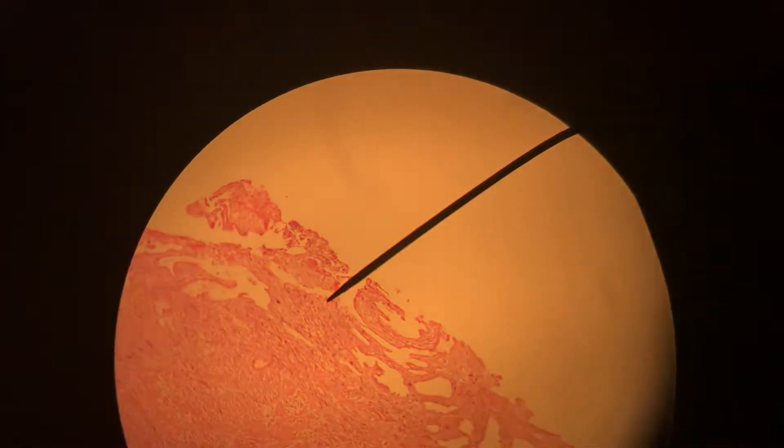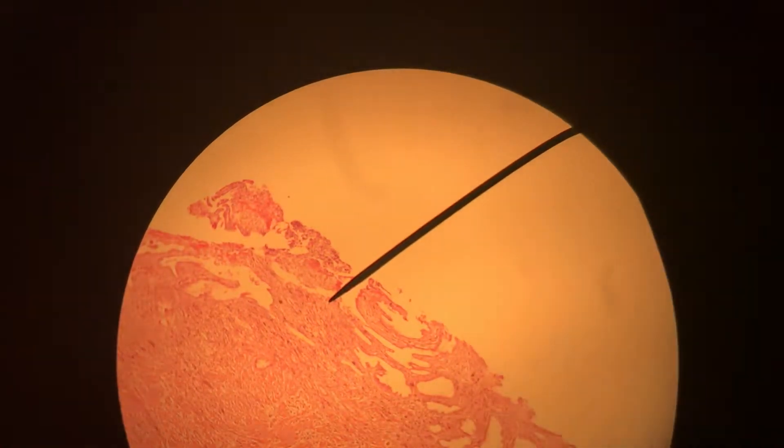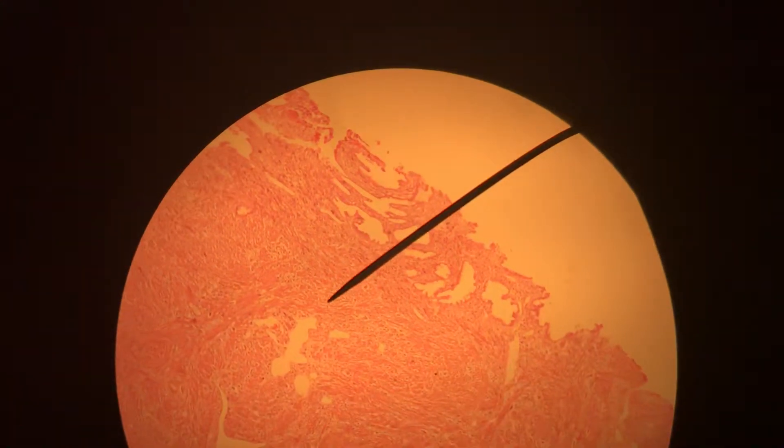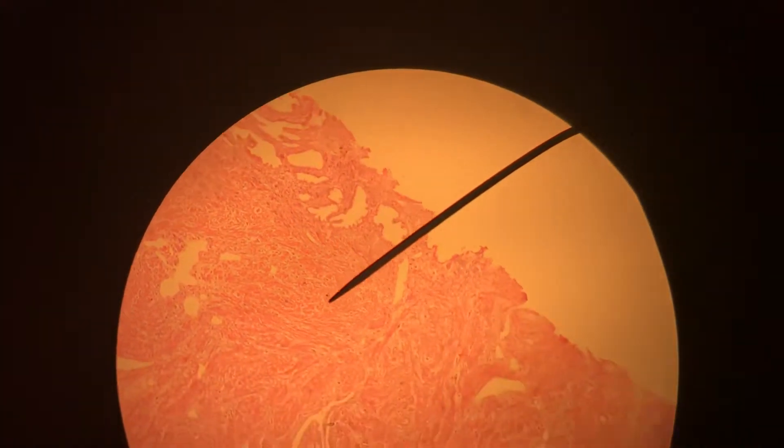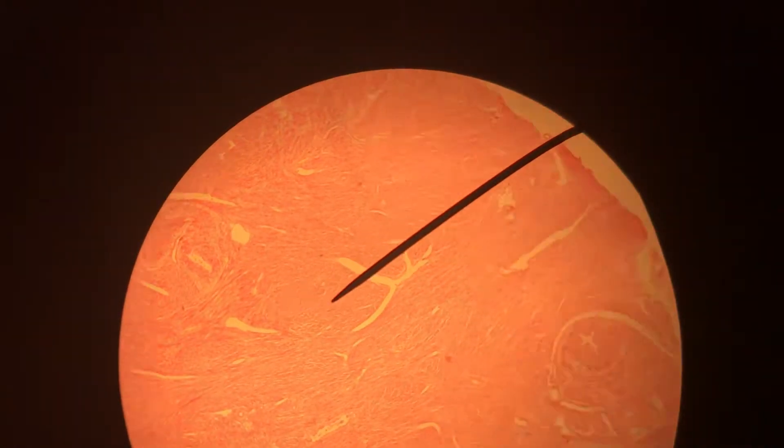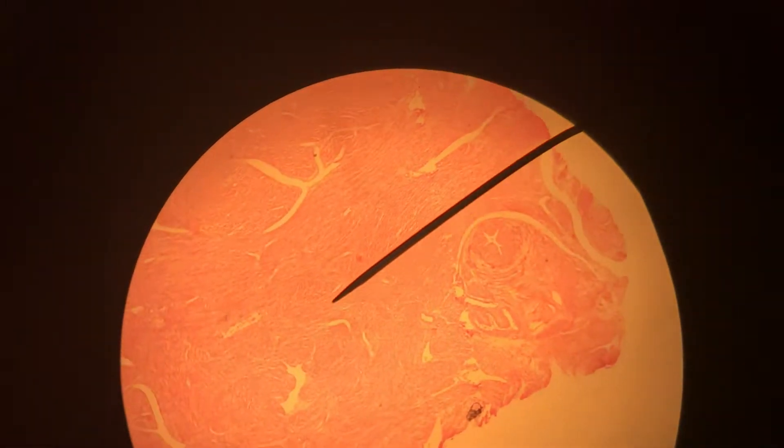So this is the slide for the uterus. I'm just going to show it around and you identify your structure, which is just the myometrium and the endometrium.